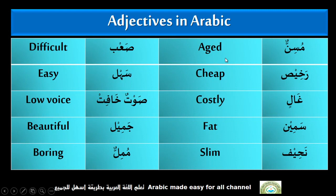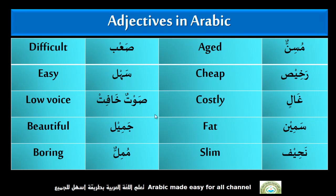Musinnun — Aged. Rakhisun — Cheap. Ghalin — Costly. Samin — Fat. Nahif — Slim. Saab — Difficult. Sahal — Easy. Sawtun Khafiq — Low Voice. Jamilun — Beautiful. Mumillun — Boring.